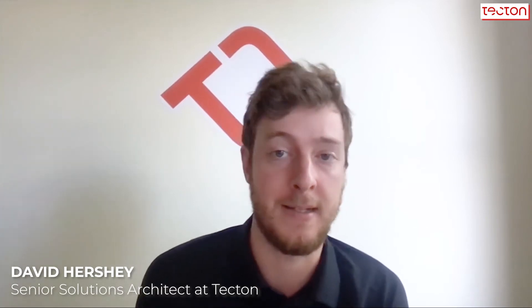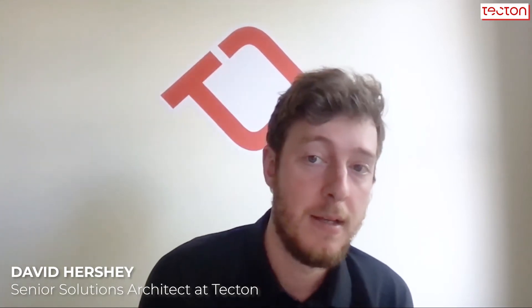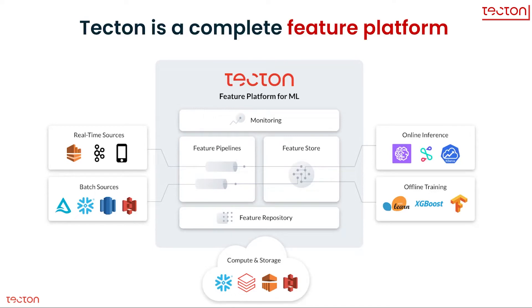Hey, and welcome to this walkthrough of Tecton. Tecton is a feature platform for machine learning, built to make it easy to get the data that you need to your machine learning models. Tecton really helps accelerate two workflows that we're going to cover in this video. The first is feature production, where Tecton helps your team build the data pipelines that compute features and keep them up to date. And the second is feature consumption, where Tecton provides a set of tools to discover features as well as simple APIs to collect features for training models or doing model inference.